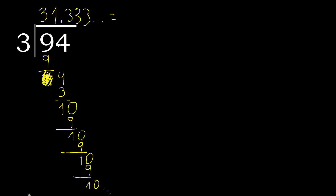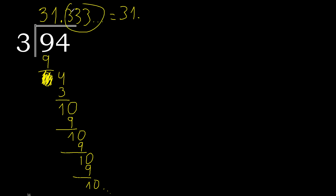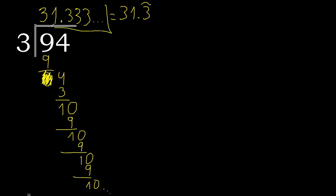94 divided by 3 is 31.333... — or written like this: after the decimal point, 3 repeats. The answer is 31.3 repeating.